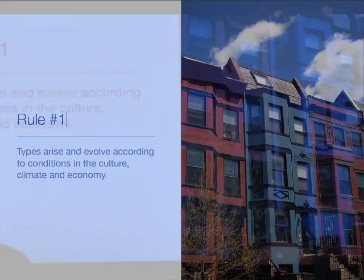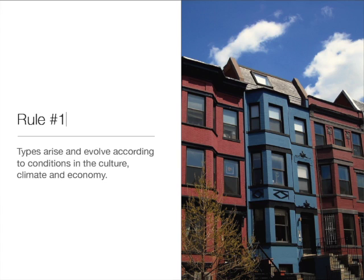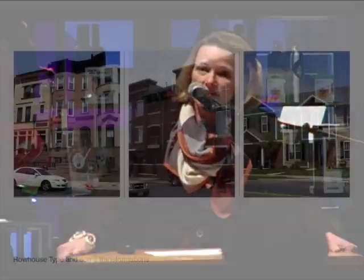There are rules that apply to types, and I'm going to give you two rules. The first rule is that types arise and evolve according to conditions in the culture, climate, and economy. Types are something that kind of emerge from the culture because they respond to specific conditions — they satisfy certain conditions in the culture when they arise, and they're sort of embedded in that culture.